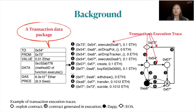For example, in this figure, a traced transaction includes nine execution traces, sent from address 0x73 to call a function executed in contract 0x504. The transaction triggered a set of execution traces, including an internal call to the vulnerable function.